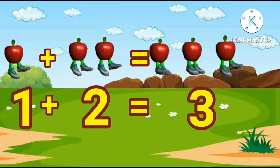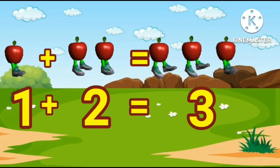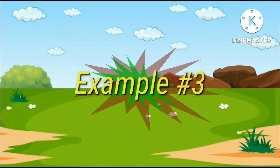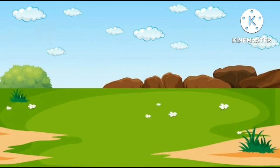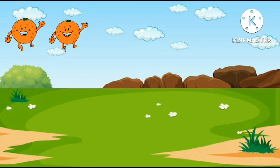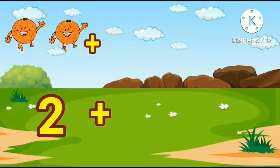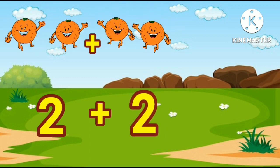The total number of apples is three. One plus two equals three. Example three: we have two smiley oranges plus two more oranges.